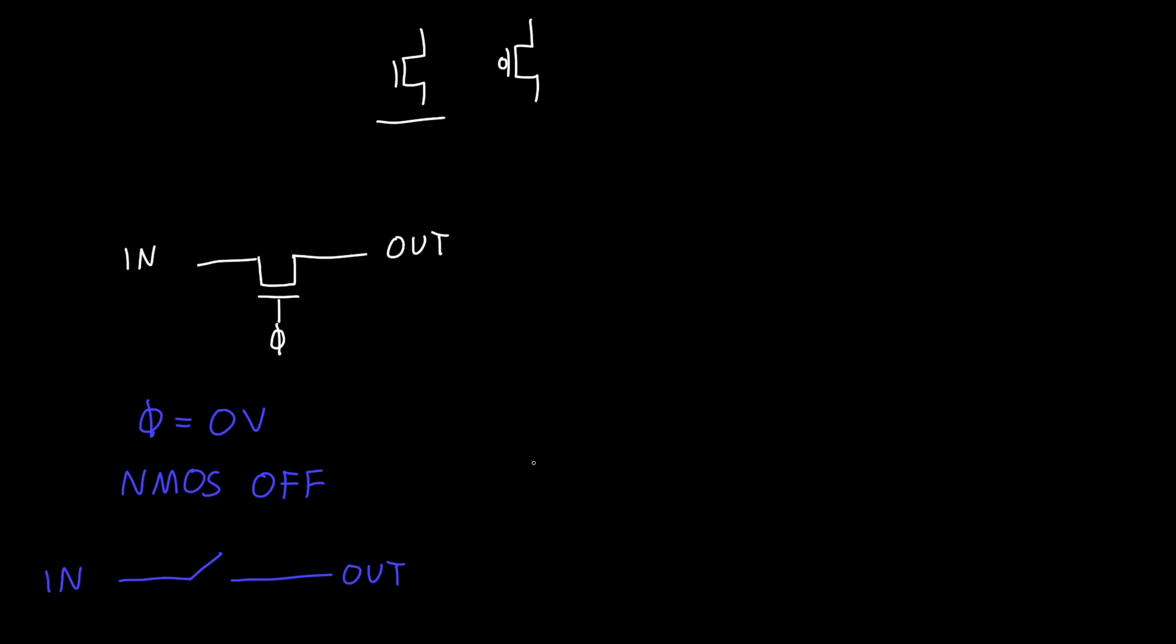But what about when the control signal is equal to VDD? Then the NMOS should be on. So our NMOS, our circuit, if we redraw it, it looks something like this. This is VDD.